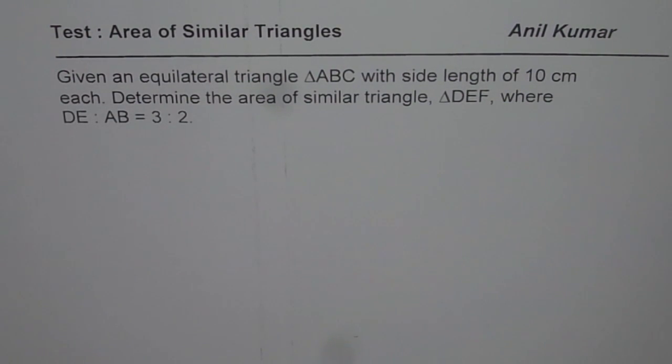The question here is: given an equilateral triangle ABC with side length of 10 centimeters each, determine the area of similar triangle DEF where DE to AB equals 3 to 2.